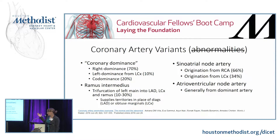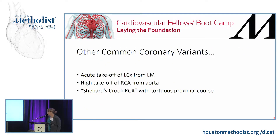As far as rhythm abnormalities, we always say right coronary disease, but it's important to keep in mind that 34% of people may supply their SA node from the left circumflex. The AV node generally goes with whatever the codominant artery is in that patient. Other common variants seen intraoperatively or on cath include acute takeoff of the left circumflex from the left main, high takeoff of the RCA from the aorta, and a shepherd's crook RCA.